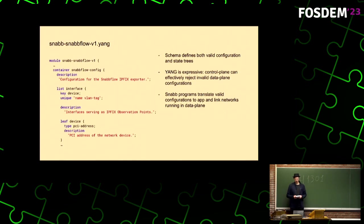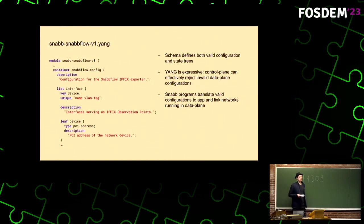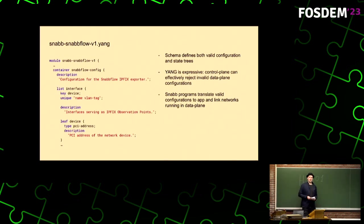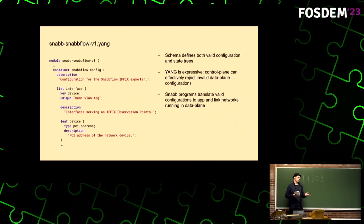Here we have a snippet of the SnapFlow YANG schema. YANG is one of those things where at the beginning you wonder if you're really going to need it, but once you have it you're usually really happy that you do. What I like specifically about YANG is it's very expressive. If a configuration passes the control plane and it's not rejected as invalid, I'm pretty confident that configuration will do something useful in the data plane and will not just crash.